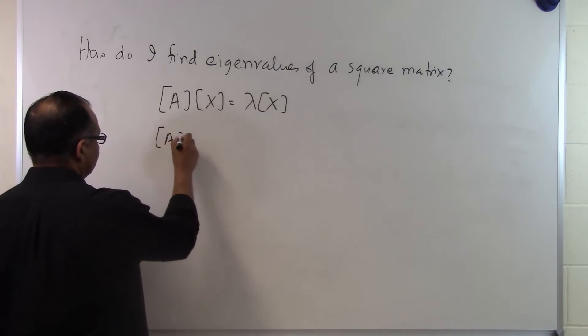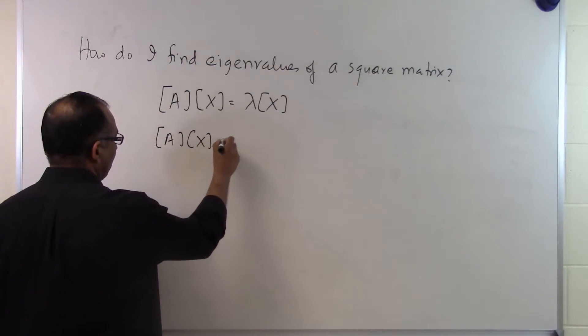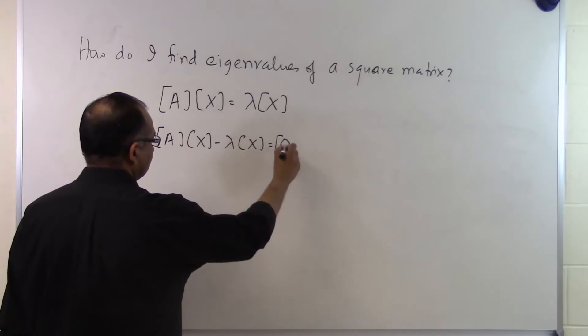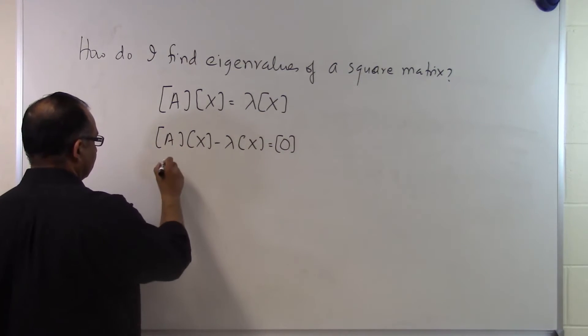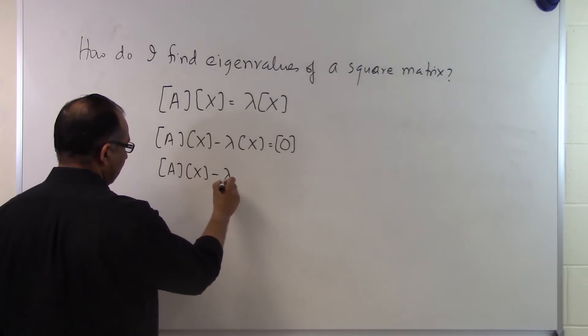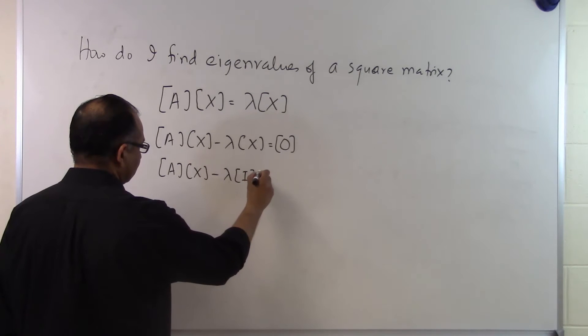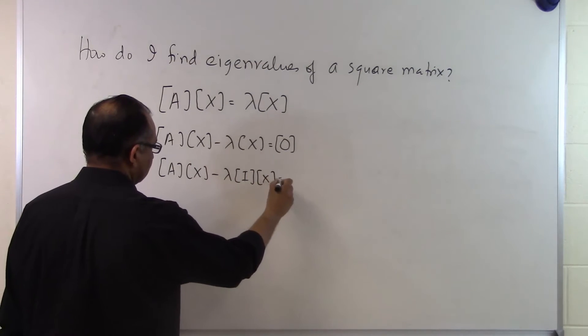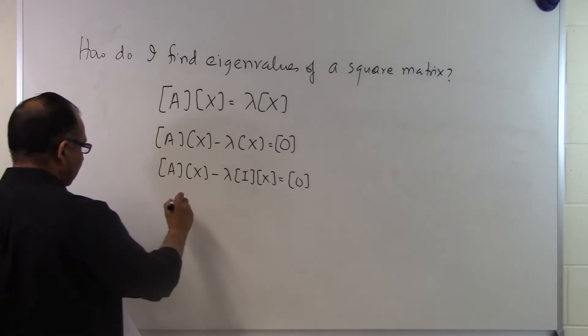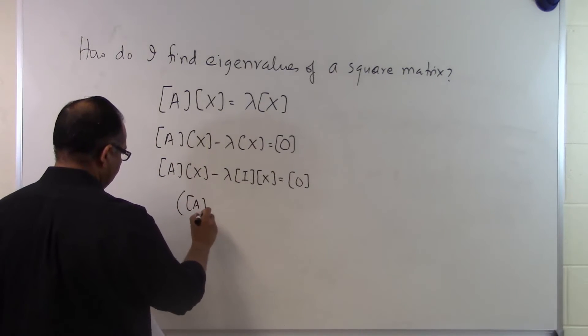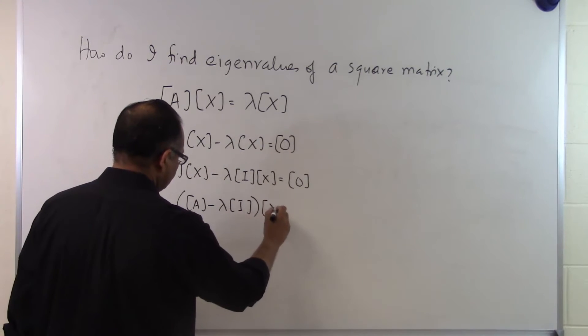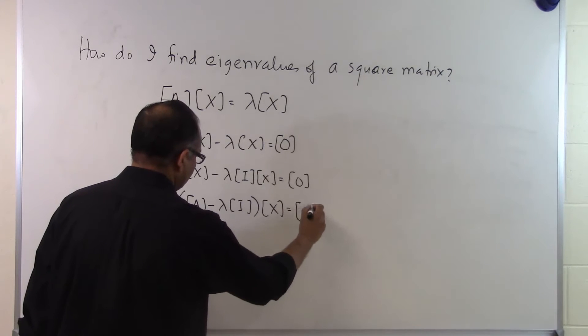So what that means is A times x minus lambda times x is equal to zero. That's a zero vector right there. So we get A times x minus lambda times I times x is equal to the zero vector.